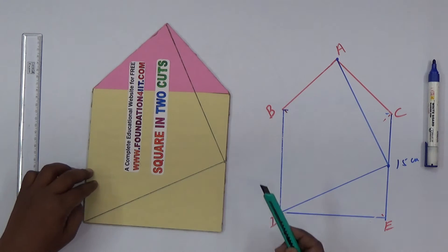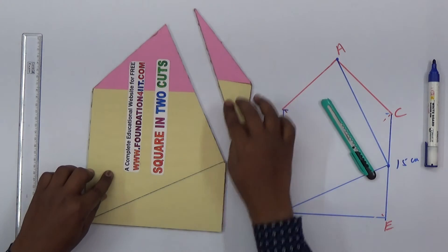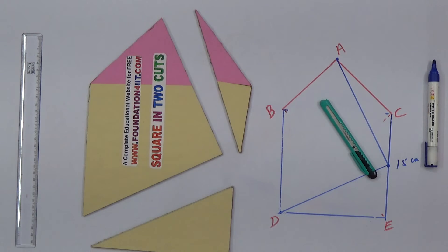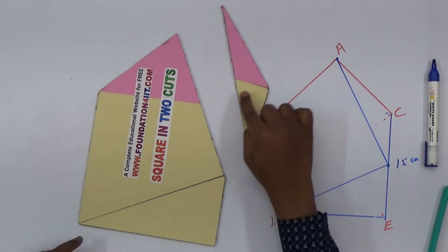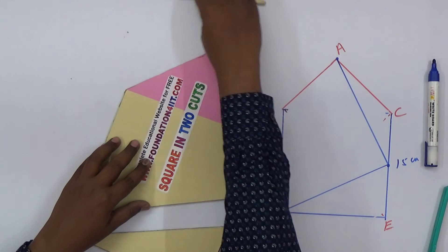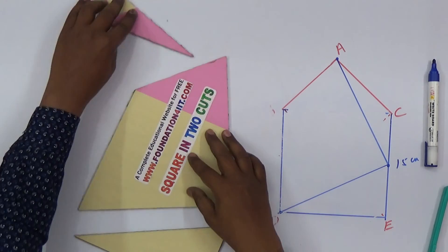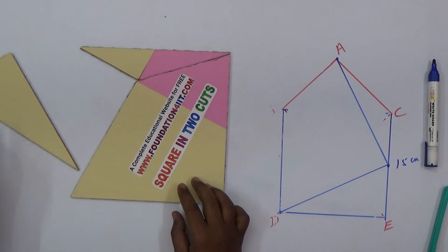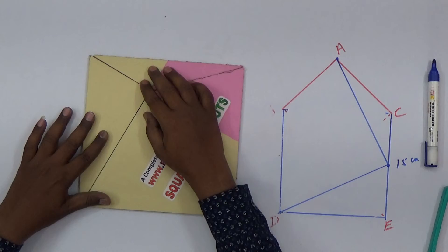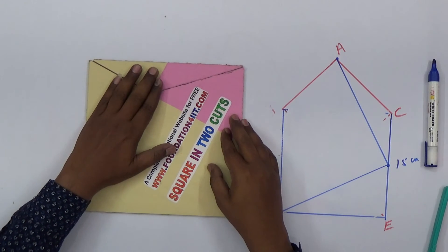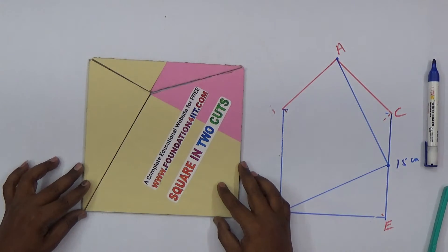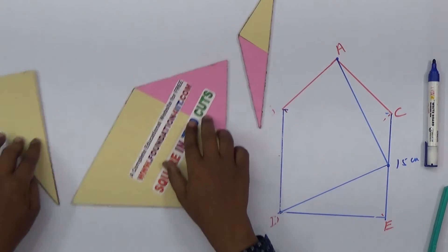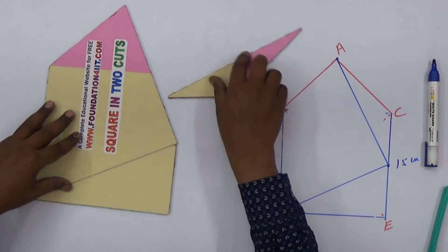These three pieces we should join to form the square. From here to this is the center point of this side. You can cut using this cutter. Now these are the three parts - using these three we need to form exactly the square shape.